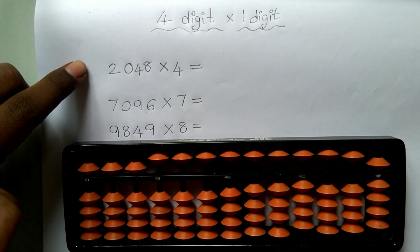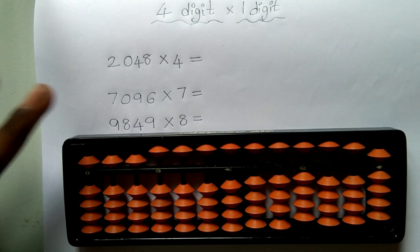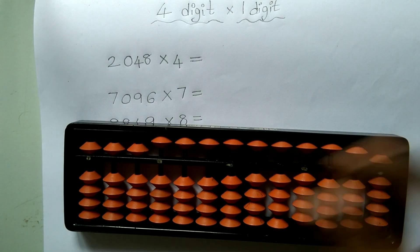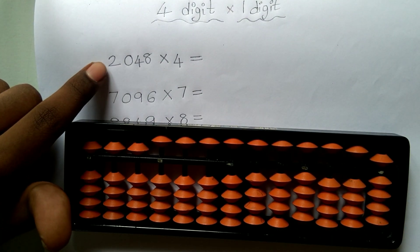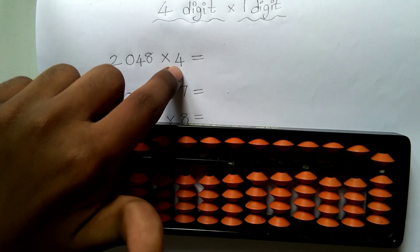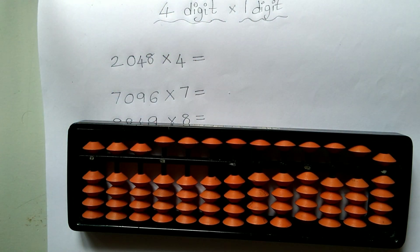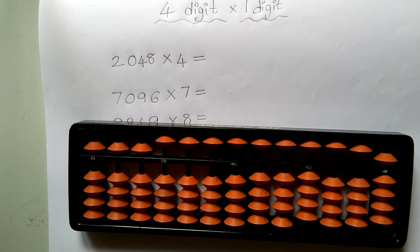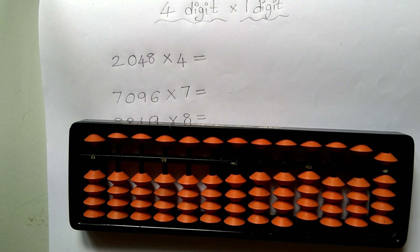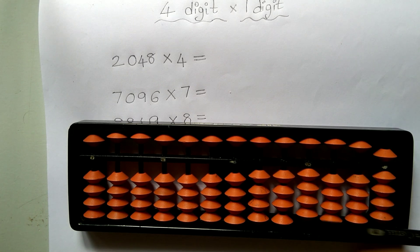The first example is 2048 × 4. The first step is to multiply the first 2-digits in the first number with the second number, which means 20 × 4. We know that 2-digit × 1-digit is always a 3-digit answer. So 20 × 4 can't be 80. Then what can it be? We have to represent it as 0, 8, 0.